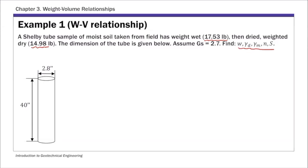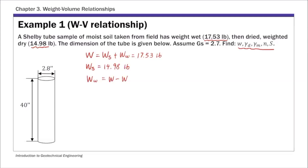To solve this using a phase diagram, we need to draw and complete the phase diagram. The total weight of the soil sample is weight of solids plus weight of water, which is 17.53. The dry weight, which is weight of solids, is 14.98. We can then calculate the weight of water, which is 2.55. So we know the total weight, weight of solids, and weight of water.